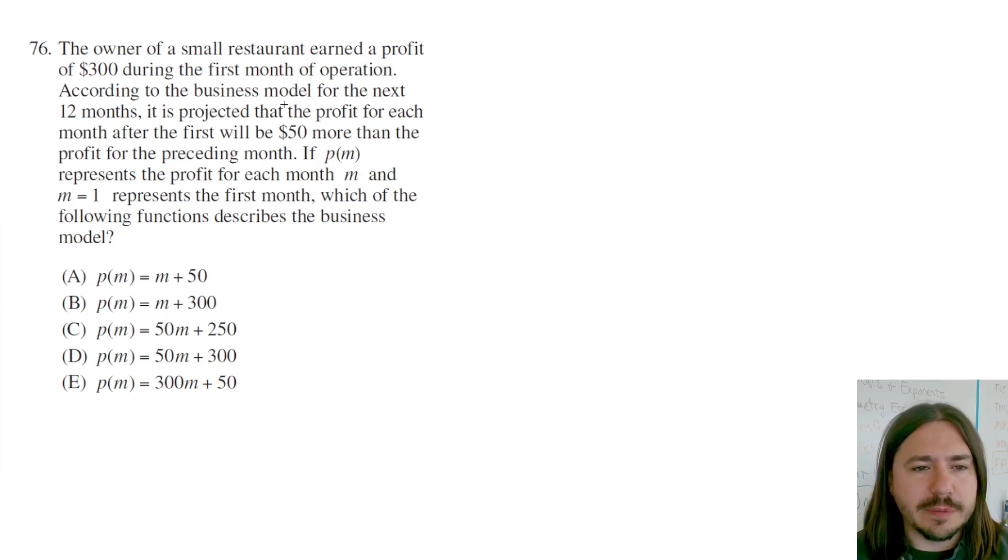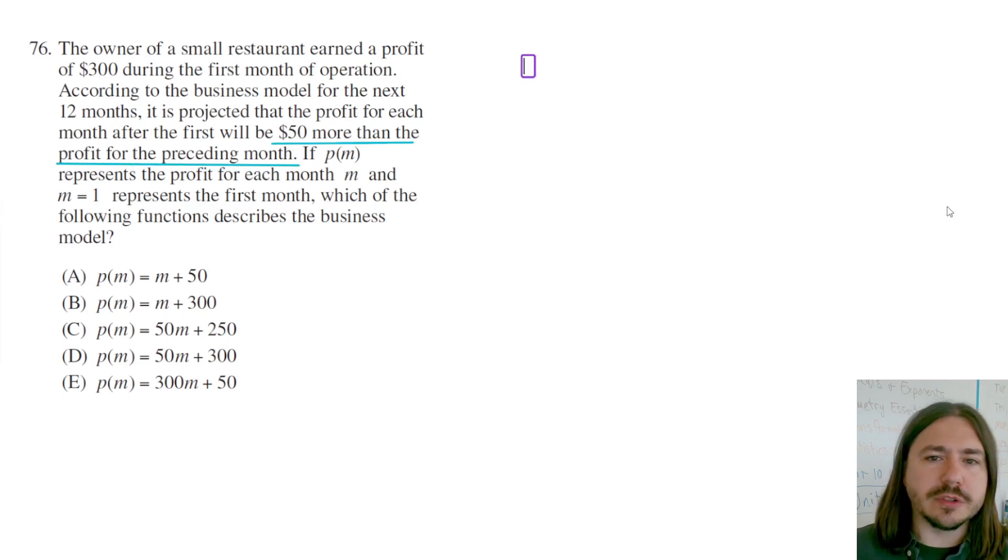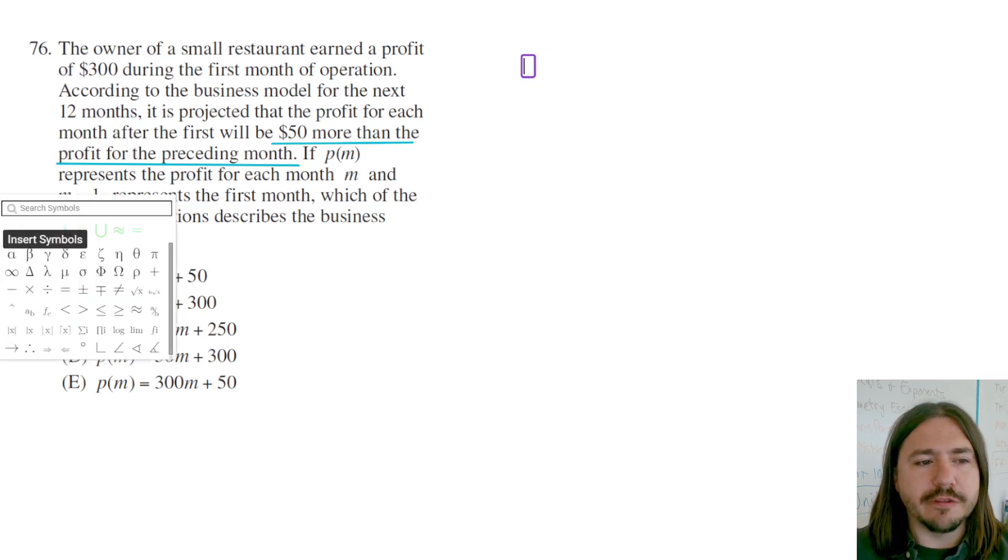There's a couple of key pieces of information here. First, their profit is going to be $50 more than the profit for the preceding month. So we're going to have a constant rate of change of $50, and that indicates we'll be able to write our equation in the classic y equals mx plus b form, because we're going to have a linear function.